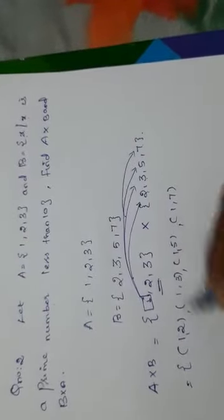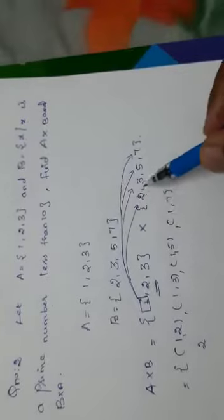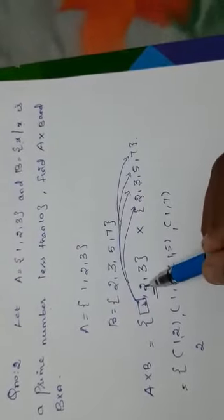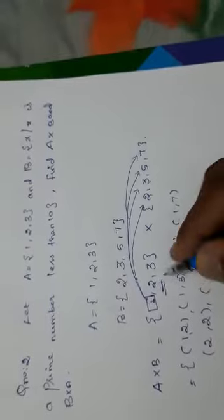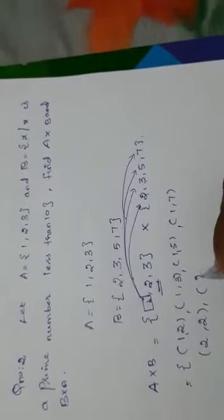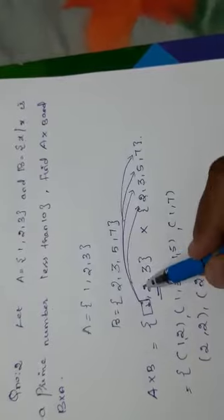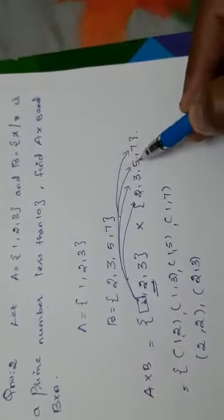Next we will take the second element. Second element is 2. Again, you have to start with the second element. 2 comma 2. Next, 2 comma 3. Next, 2 comma 5.